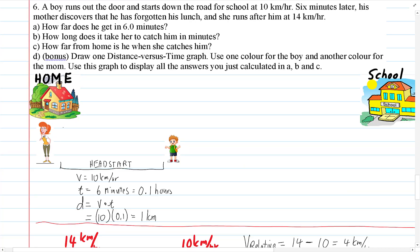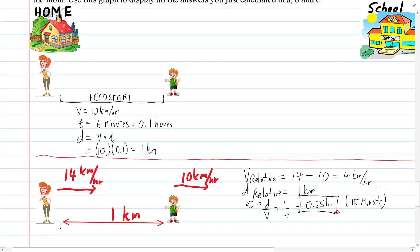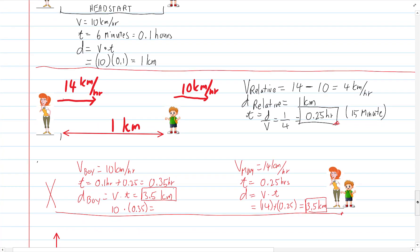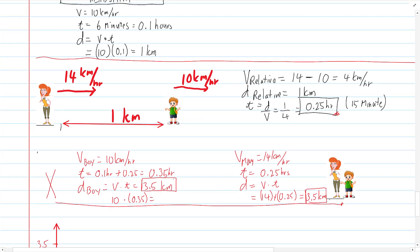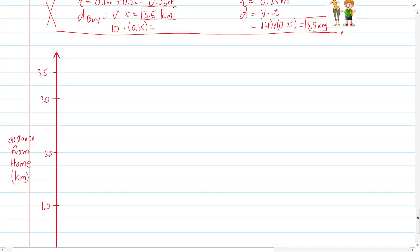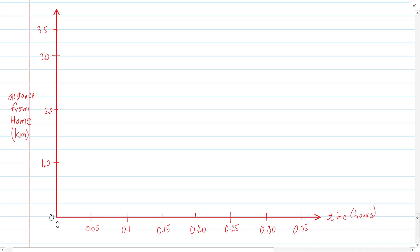And now for the bonus part. Number D. This is going to be over our heads. But I like throwing you in to see how good you can swim. I'm going to draw one distance versus time graph. Use one color for the boy and another color for the mom. And use this graph to display all the answers you've just calculated in A, B, and C. A was how far does he get in the first six minutes, one kilometer. B was how long does she have to run to catch him, 0.25. And then the last one is how far away they are, which is 3.5 kilometers. So I've already done a little bit of a jot here of a quick sketch graph. Here we go.